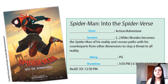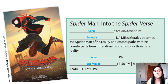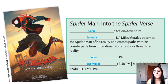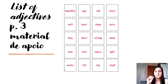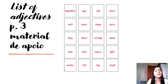Muito bem, vamos lá. So — action adventure is the genre. A segunda parte é a sinopse — it's the synopsis of the movie. PG is the rating. Lembra que PG significa parental guidance? E por último, nós temos os horários — show times. Guys, eu queria lembrar vocês que vocês têm uma lista de adjetivos na página 3 do material de apoio, com imagens e palavras para recortar e fazer um jogo da memória. Podem convidar a família para brincar e aproveitar para rever esse vocabulário.